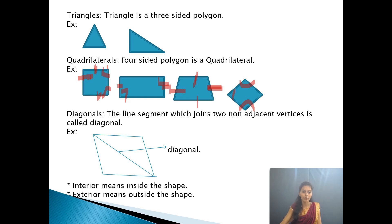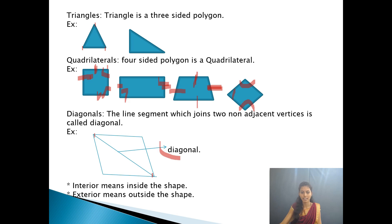A diagonal is the line segment that joins two opposite (non-adjacent) vertices of any polygon, except a triangle. For any given vertex in a quadrilateral, the two vertices beside it are adjacent, so the one across is non-adjacent — the line joining them is the diagonal. Interior means inside the shape; exterior means outside the shape.